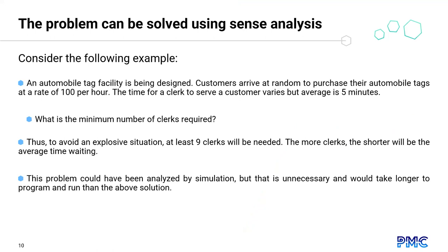Checkpoint one: when the problem can be solved using simpler analysis. For example, an automobile tag facility is being designed and customers arrive to purchase tags at a rate of 100 per hour, with an average service time of five minutes per clerk. What is the minimal number of clerks required? At least nine clerks are needed. This is a problem that could have been analyzed by simulation, but that's unnecessary — it would take longer to program and run than the simpler solution.